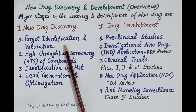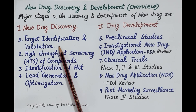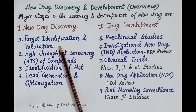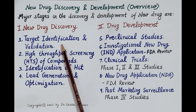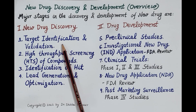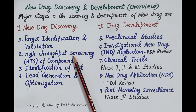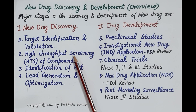The first step in new drug discovery is target identification and validation. The target involved in a specific disease is identified whose functioning could be modified by a new drug to produce the therapeutic effect. Once this target is identified, it is validated — that is, reconfirmation that the target identified is correct.